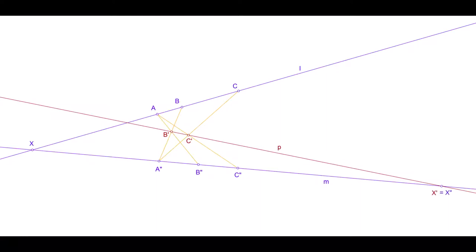The intersection of L and M, let's call it X, projects to the intersection of P and M. Now suppose we had drawn P differently. Suppose we had used the crosslines of A and B as we have, and B and C instead of those of A and C. Would we get a different line P?